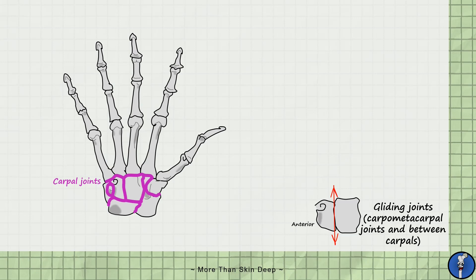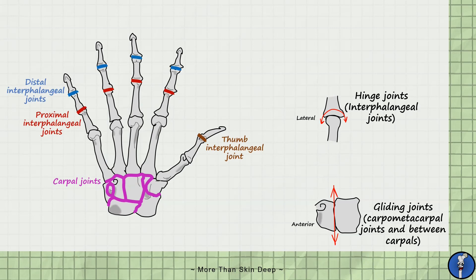Next we have the slightly more complex hinge joints. These allow simple flexion and extension like a door hinge. In the hand all of the interphalangeal joints are hinge joints.